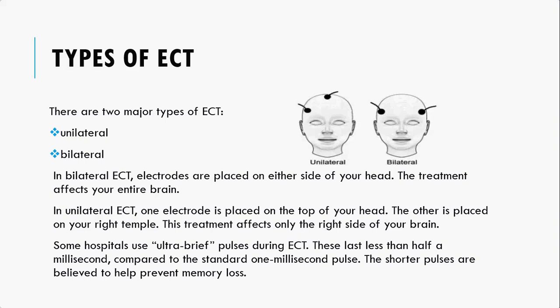There are two types of ECT: unilateral and bilateral. In bilateral ECT, electrodes are placed on either side of your head and the treatment affects your entire brain. In unilateral ECT, one electrode is placed on the top of your head and another on your right temple; this treatment affects only the right side of your brain. Some hospitals use ultra-brief pulses during ECT, lasting less than half a millisecond compared to the standard one millisecond pulse. The shorter pulses are believed to help prevent memory loss.